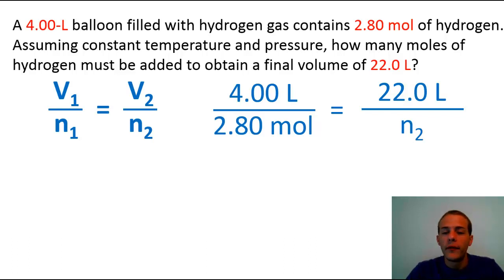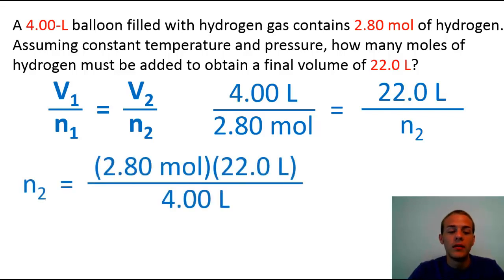So all we need to do to solve this equation is to algebraically just move some things around. So what we're going to do is we're going to multiply both sides of the equation by 2.80 moles. And we're also going to multiply both sides of the equation by n2. And then we're going to divide both sides of the equation by 4.00 liters. And then that will give us this result down here where we have n2 is equal to 2.80 moles times 22.0 liters divided by 4.00 liters.